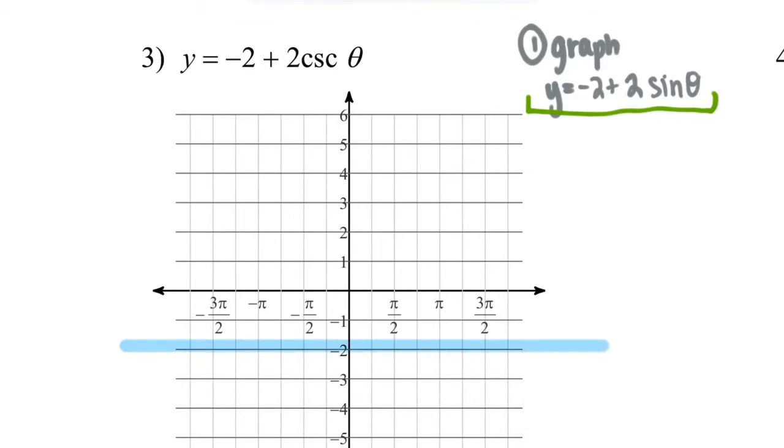Our amplitude is 2. And there's no other changes here. So sine starts at the midline. 2 pi later, because the period is not affected, sine ends at the midline. And then halfway between, we're at the midline.